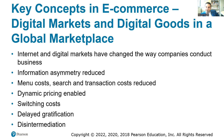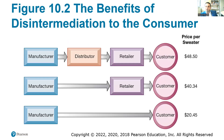E-commerce enables disintermediation — eliminating the intermediaries, the people in the middle between the buyer, seller, and manufacturer. E-commerce can eliminate distributors and retailers, keeping only the manufacturer and the buyer. For example, a sweater bought through distributors and retailers might cost $50, but bought directly from the manufacturer it could be around $20. You are eliminating the middle person.